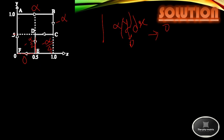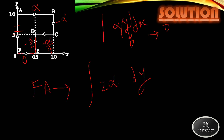Now let us consider the last segment, F to A. For F to A, the second integral 2αx dy is present, but here x equals zero throughout, so the work done for F to A is also zero.